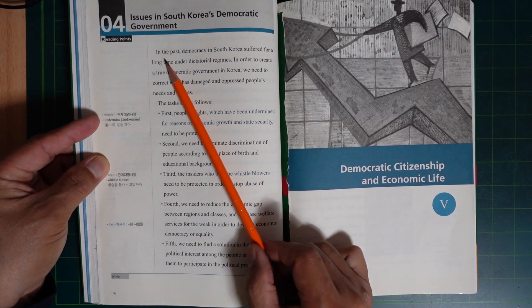...in order to develop economic democracy or equality. Fifth, we need to find a solution to the lack of political diversity among the people and encourage them to participate in the political process.